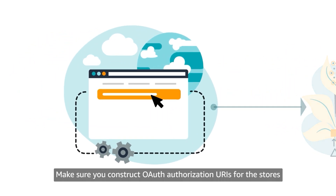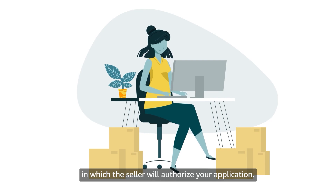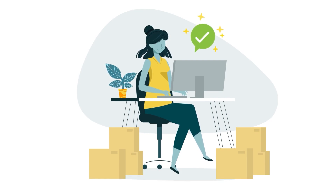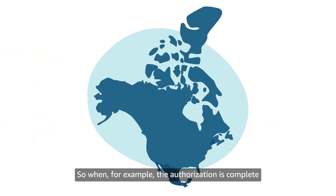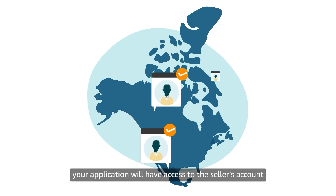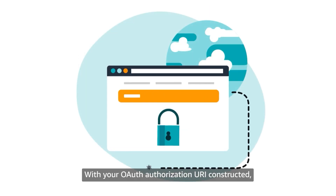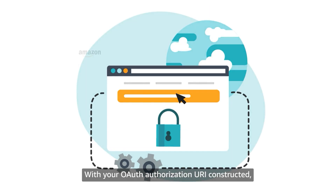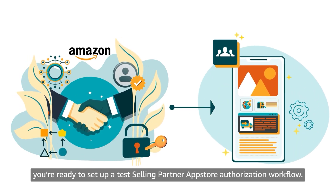Make sure you construct OAuth Authorization URIs for the stores in which the seller will authorize your application. Authorizations are regional — so when, for example, the authorization is complete for a Seller Central account for Mexico, your application will have access to the seller's account in any store in North America. With your OAuth Authorization URI constructed, you're ready to set up a Test Selling Partner App Store Authorization workflow.